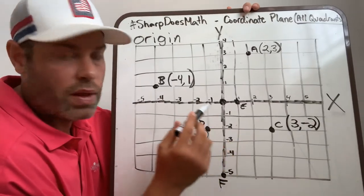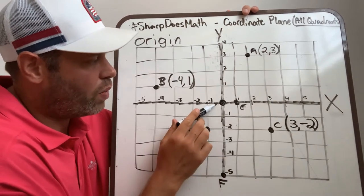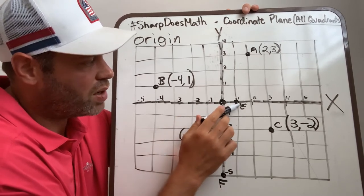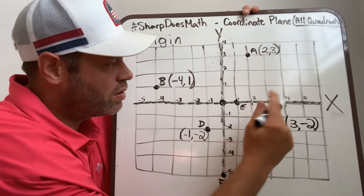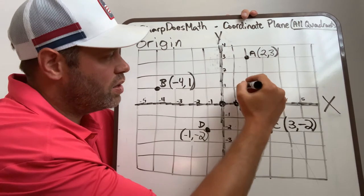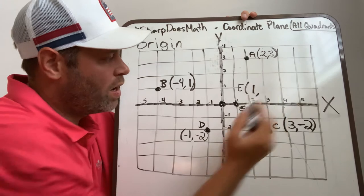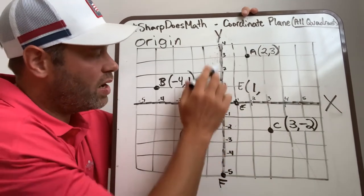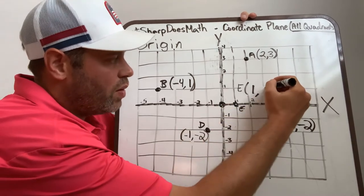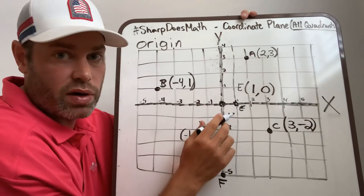E is one of those that falls right on the x-axis. I'm starting at the origin. I'm going to go over 1, positive 1. So E, we went positive 1, and then we don't have to go up or down on that y-axis. It's just staying there, so that would be 0. Over 1, up or down 0. Didn't have to go anywhere.